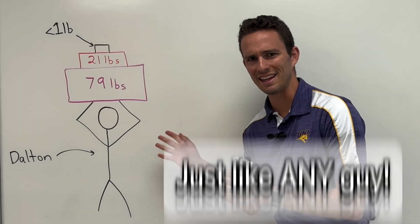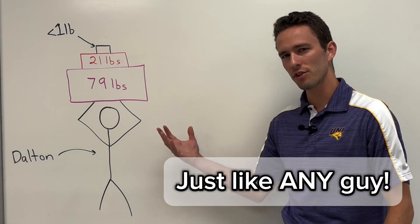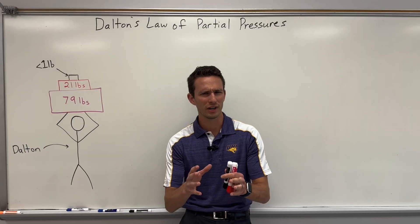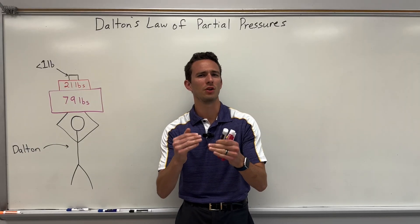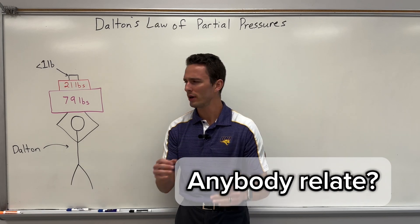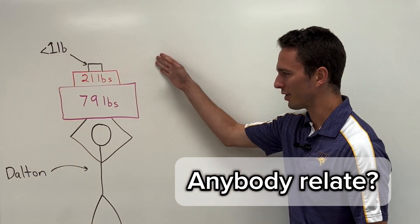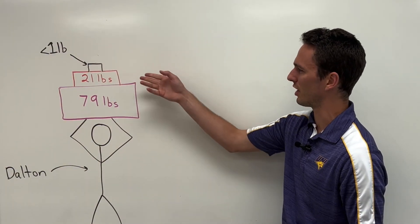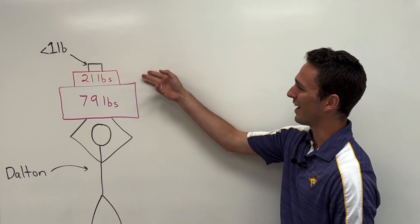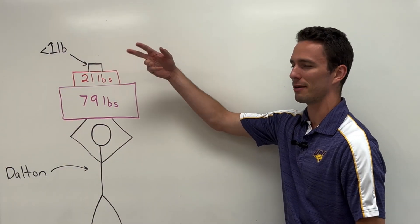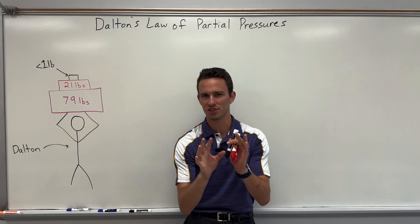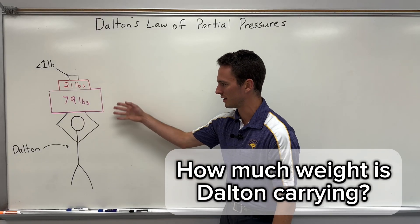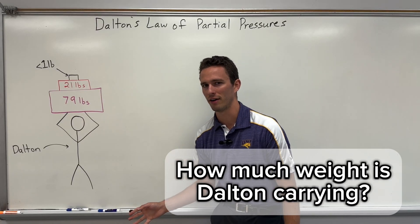Dalton is just like any guy. He goes to the store, buys some things, and he has to bring them into the house in one trip. He bought three different objects — one being 79 pounds, another being 21, and one being less than a pound. The question is, how much weight is Dalton carrying right now?